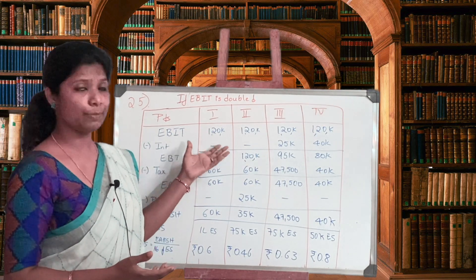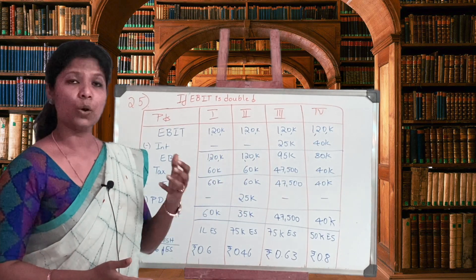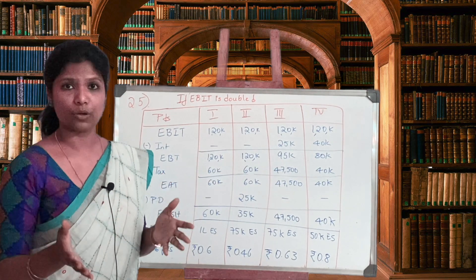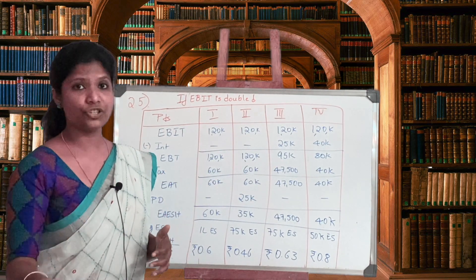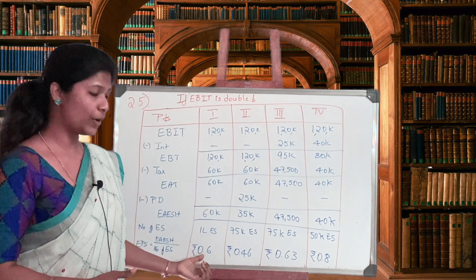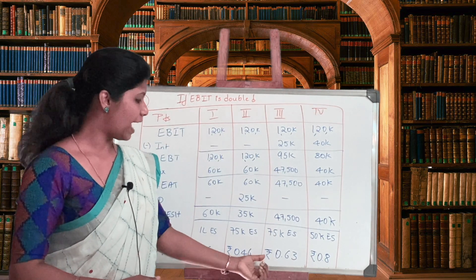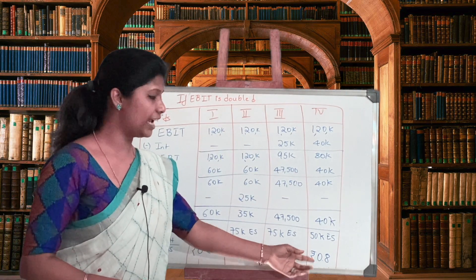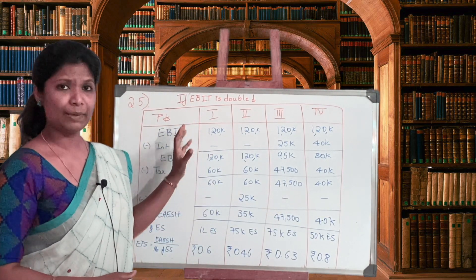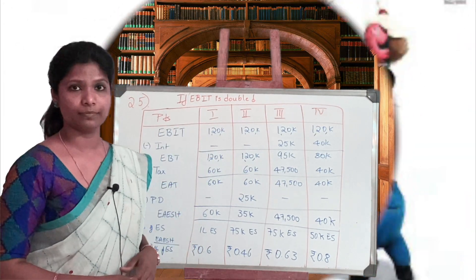So the EPS when EBIT is doubled: plan one is 0.60, plan two is 0.46, plan three is 0.63, and plan four is 0.80. This shows the implication when EBIT is doubled and its impact on EPS — when profits double from 60,000 to 1,20,000, the earnings per equity shareholder increase across all plans, with the all-debenture plan showing the highest EPS of 0.80.